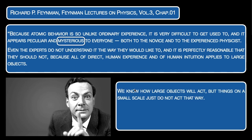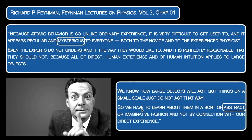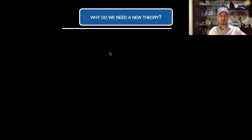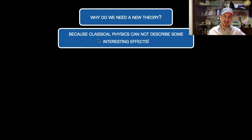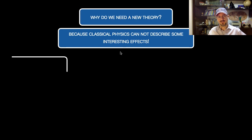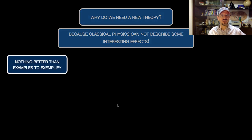We know how large objects will act, but things on a small scale just do not act that way. So we have to learn about them in a sort of abstract or imaginative fashion and not by connection with our direct experience. So again the question: why do we need a new theory? Because classical physics cannot describe some interesting effects.